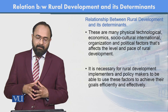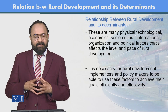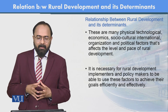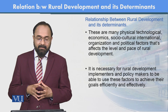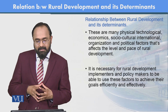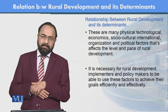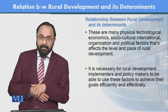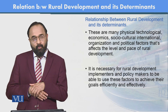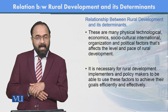The relation between rural development and its determinants: there are many physical, technological, economic, sociocultural, international organization, and political factors that affect the level and pace of rural development. It is necessary for rural development implementers and policy makers to use these factors to achieve their goals efficiently and effectively.